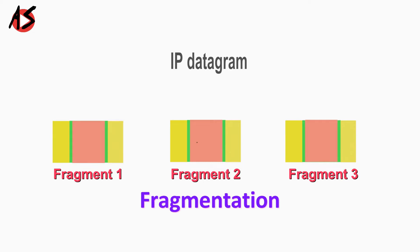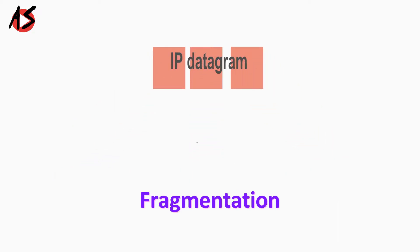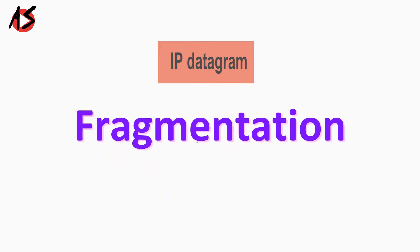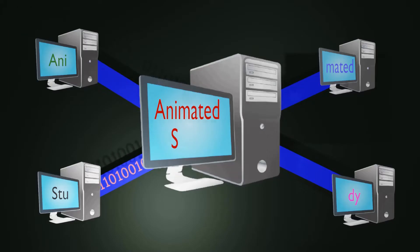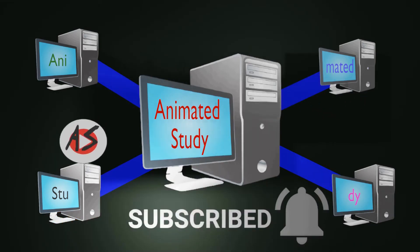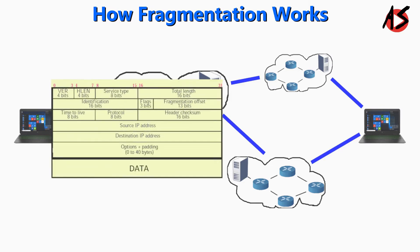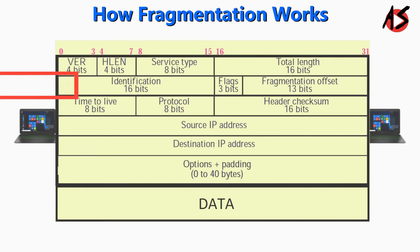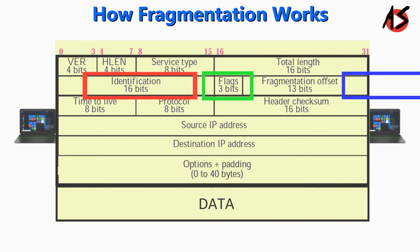At the final destination, all such fragments are reassembled to get the original datagram. The fields related to fragmentation and reassembly of an IP datagram are the identification, flags, and fragmentation offset.